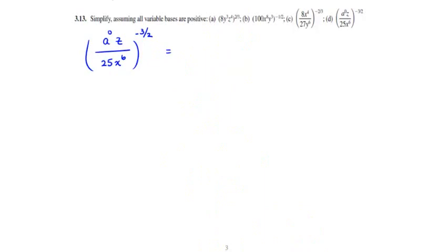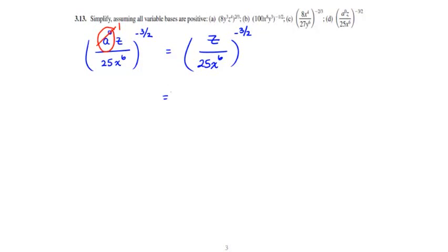For Part D, the first thing to note is that because a is non-zero, a to the 0 simplifies to 1. So the problem really becomes z over 25x to the 6th, all raised to the negative 3/2 power. We proceed as before: remove the negative exponent by taking the reciprocal of the base, giving 25x to the 6th over z, all raised to the 3/2 power.